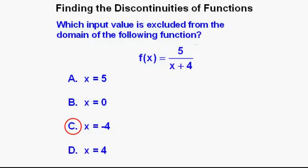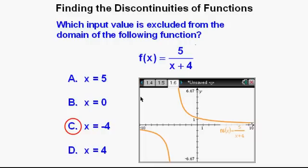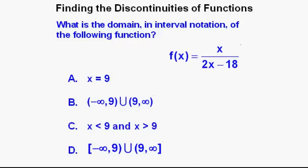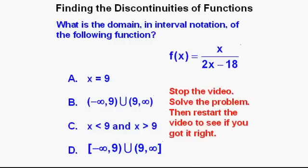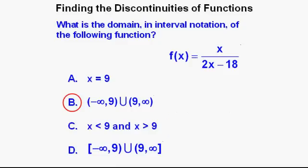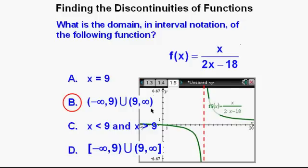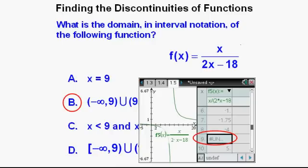When graphed on a graphing calculator, the function f(x) = 5 / (x + 4) shows a vertical asymptote at x = −4, indicated by the red vertical line segment. Next problem: What is the domain in interval notation of f(x) = x / (2x − 18)? The correct answer is B. The vertical asymptote is at x = 9, confirmed by the table view where the function is undefined at x = 9. The domain is greater than negative infinity on the left and less than infinity on the right, excluding 9.